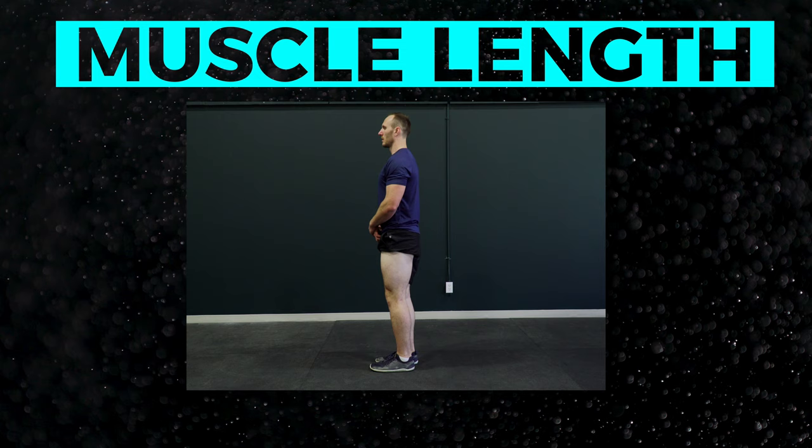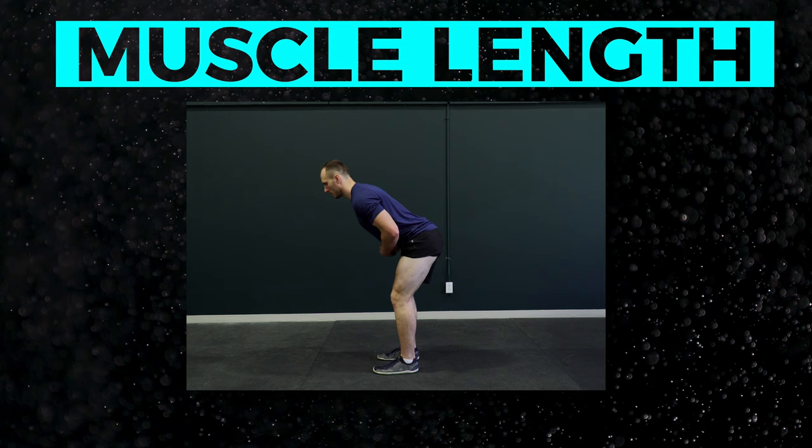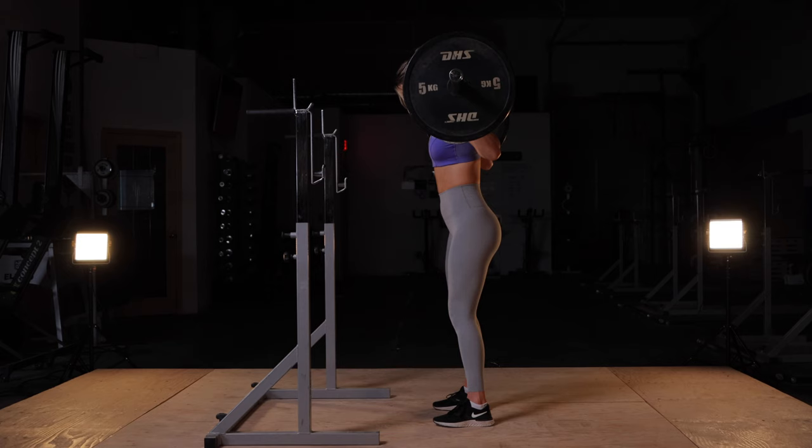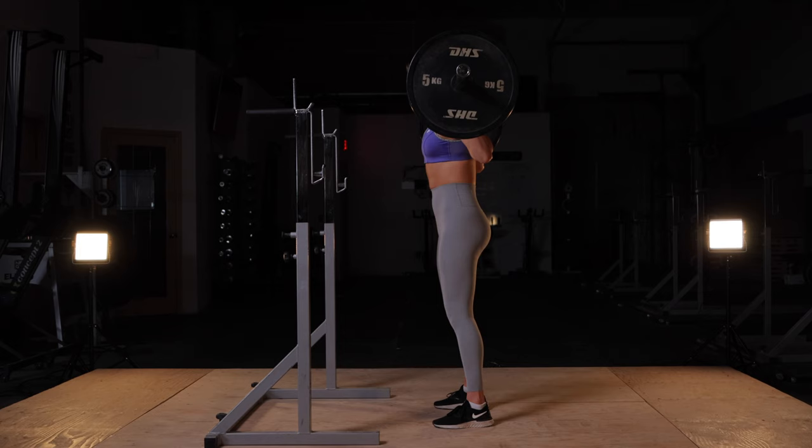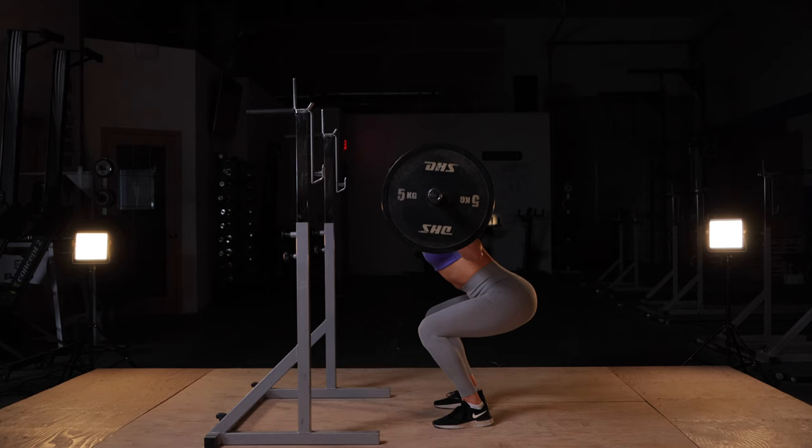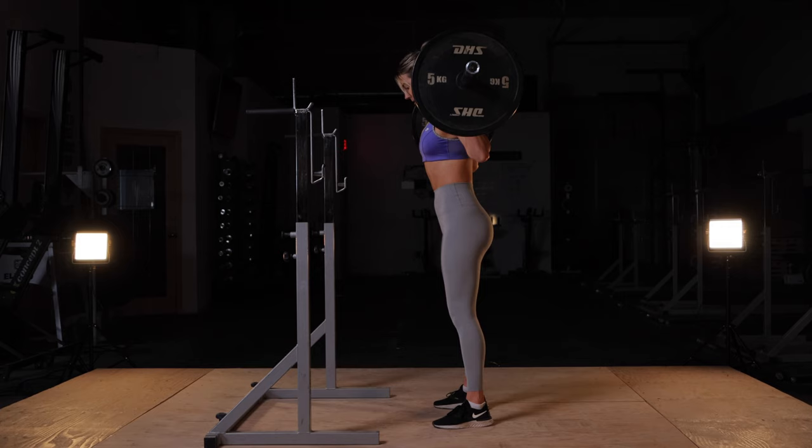Since the hamstrings generally cross both the knee and hip, changes in knee or hip angle will impact their length. As the knee extends, the hamstrings are lengthened; as the knee flexes, they shorten. As the hip flexes, the hamstrings are lengthened; as the hip extends, they shorten. This explains why squats are an ineffective hamstring exercise — when we squat, we flex the knee and hip at the same time, and then extend both simultaneously to return up, which limits the hamstrings from producing any significant force and is why we don't see much hamstring hypertrophy with squat training.